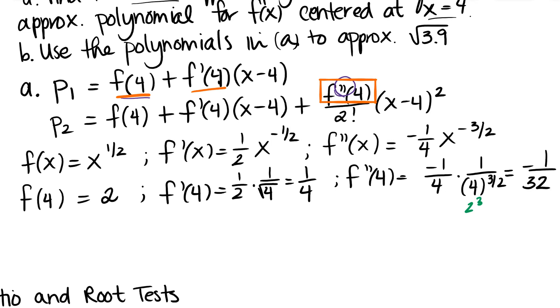Cool. So now we're ready to go. So now I'm going to go ahead and plug into my polynomials. So P sub 1 is f of 4, which is 2, plus f primed of 4, which I see is 1 fourth, all times x minus 4.